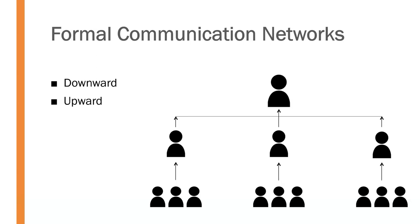Upward communication flows the opposite direction — it comes from a lower place in the hierarchical structure and moves upward through the chain of command. This takes on a different tone. Typically subordinates are not giving commands or directives to their supervisors. So upward communication takes on less of a commanding tone and more of an 'I have an idea' or 'something you may want to be aware of' quality as it makes its way up through the hierarchical structure.